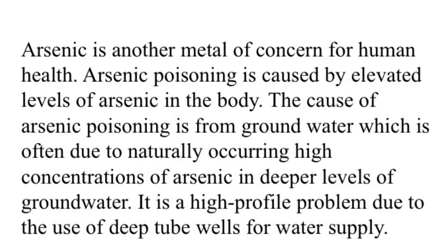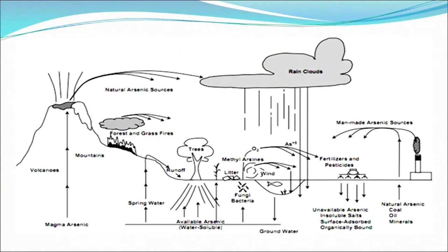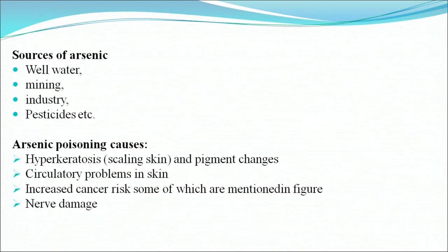Next is arsenic toxicity. Arsenic is another matter of concern for human health. Arsenic poisoning is caused by elevated levels of arsenic in the body, often from groundwater with naturally occurring high concentrations of arsenic in deeper levels. It is a high-profile problem due to the use of deep tube wells for water supply. Sources of arsenic include well water, mining, industry, and pesticides. Arsenic poisoning causes hyperkeratosis or scaling skin, pigment changes, circulatory problems, increased cancer risk, and nerve damage.